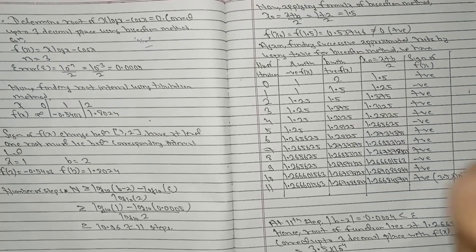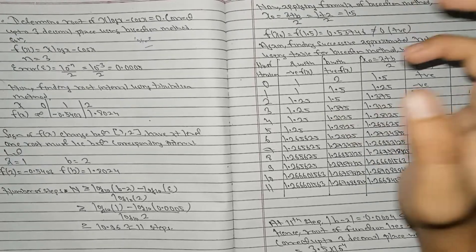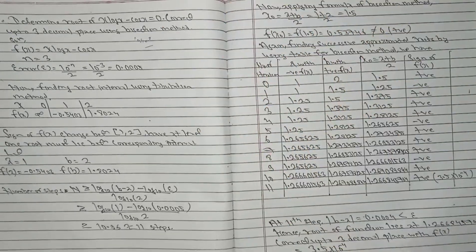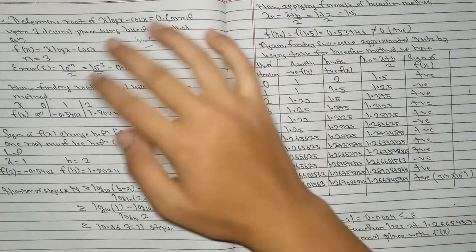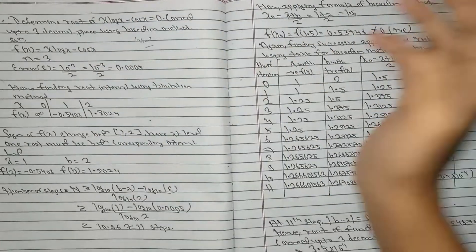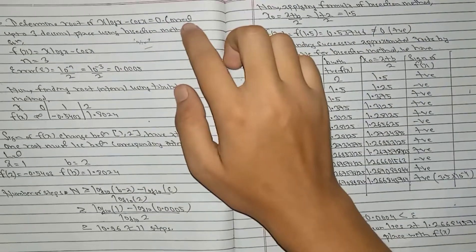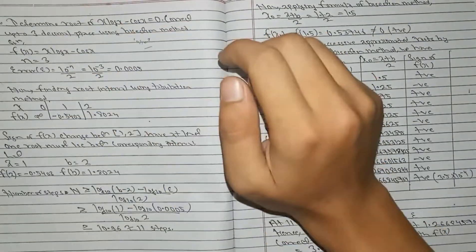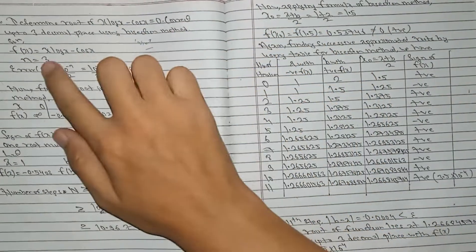We have to find the root of this question using the bisection method. The function is f(x) = x·log(x) − cos(x), and we need the answer correct to three decimal places, so n = 3.